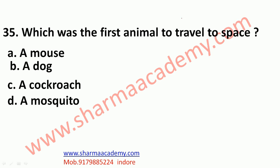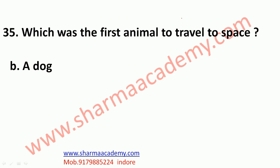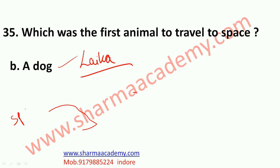The next question: which was the first animal to travel to space? The correct answer is a dog. Laika was a Soviet space dog — actually a female stray dog from the streets of Moscow — who became one of the first animals in space and the first animal to orbit the Earth. She was selected as the occupant of the Soviet spacecraft Sputnik 2, which was launched into outer space on November 3, 1957.